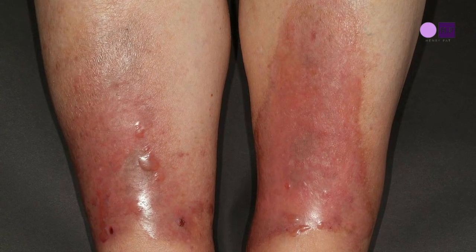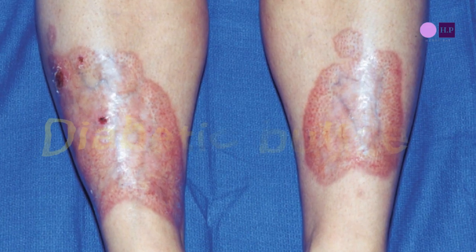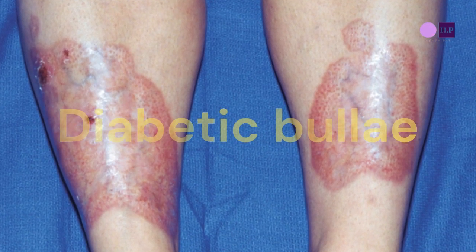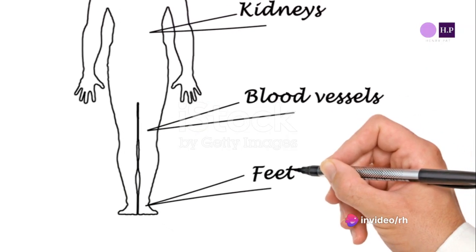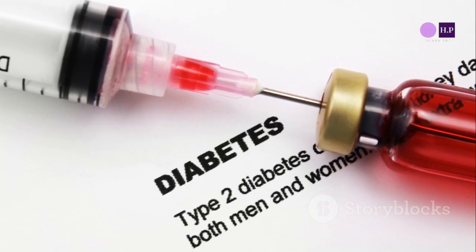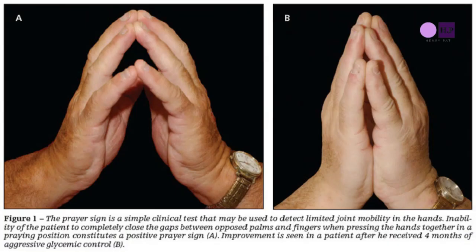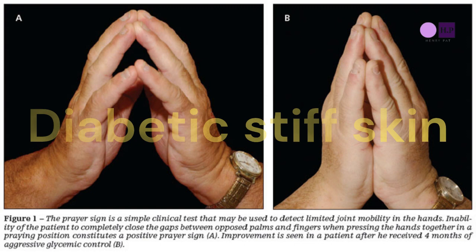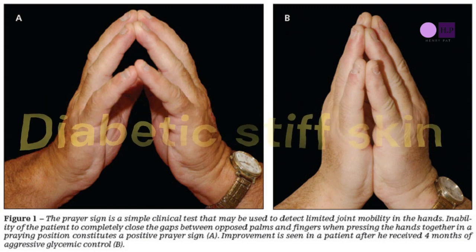There are other skin conditions that can occur in diabetes, like diabetic bullae and diabetic stiff skin. Diabetic bullae, also known as bullosis diabeticorum, are blister-like lesions that spontaneously occur on the feet and hands of diabetic patients. They are more prevalent in men and in those who have long-standing diabetes or multiple diabetic complications, particularly neuropathy. Another condition is diabetic stiff skin, also known as diabetic chiroarthropathy or digital sclerosis. This results in restricted mobility of the joints of the hands and stiff, waxy, thickened and yellowed skin.